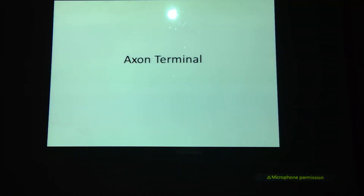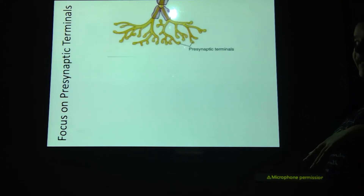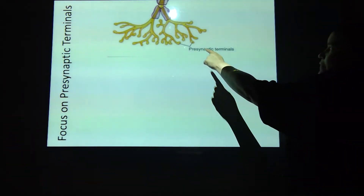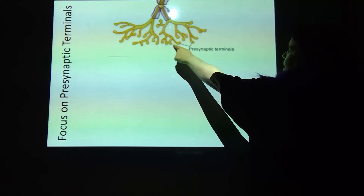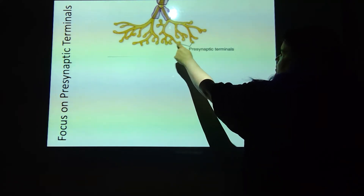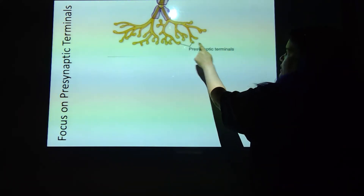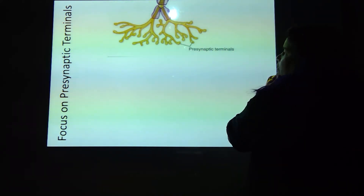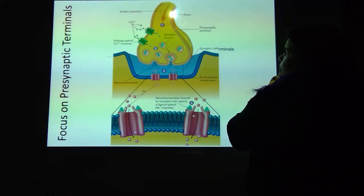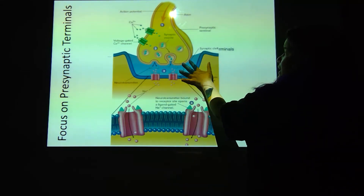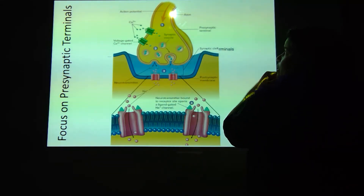So the axon terminal — remember, that's the little feet at the end. So we've got these pre-synaptic terminals. Terminal means the end, so we can call them axon terminals. Looks like this in your book.